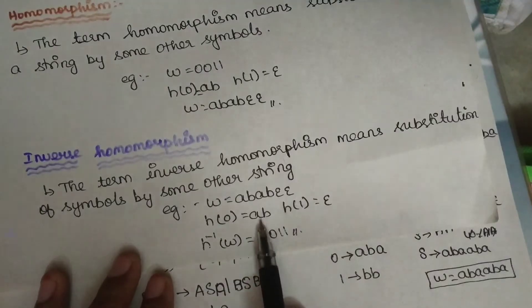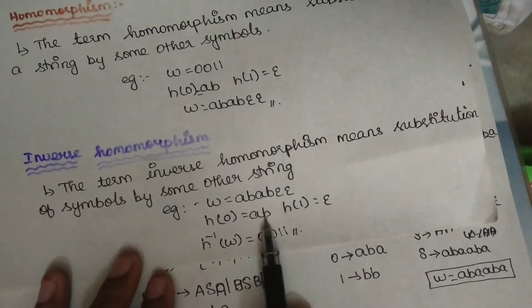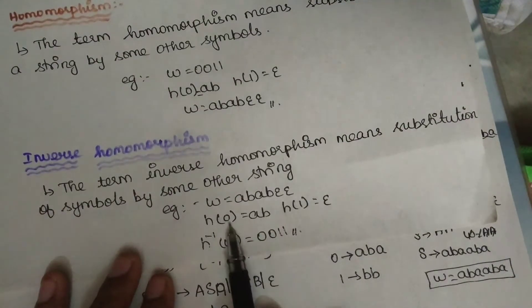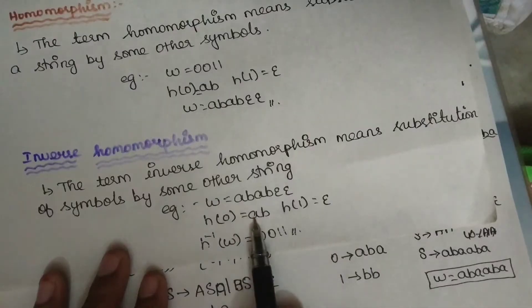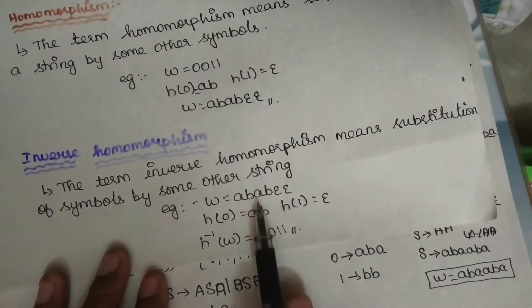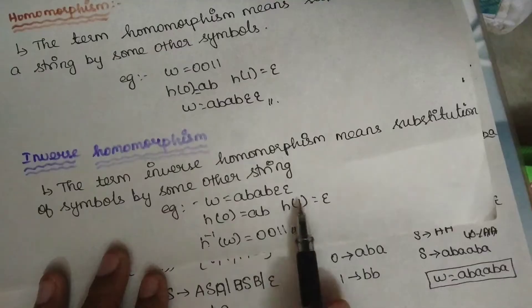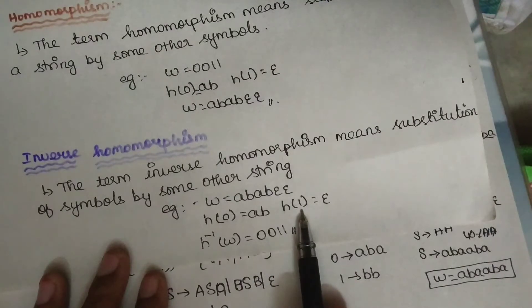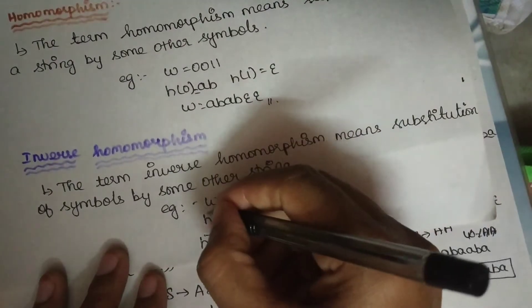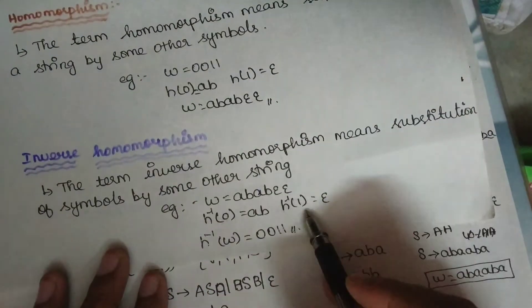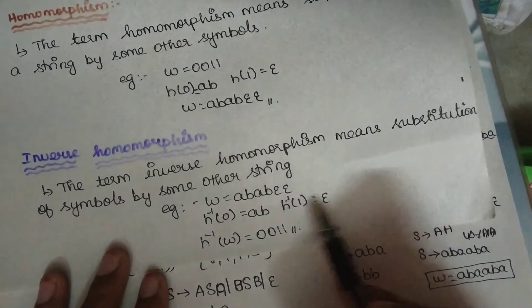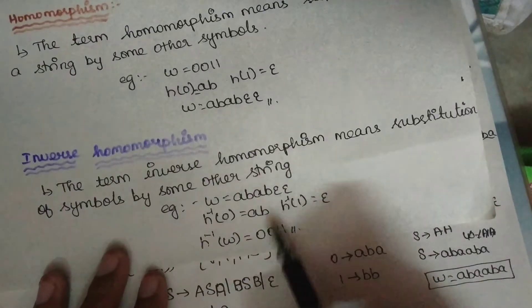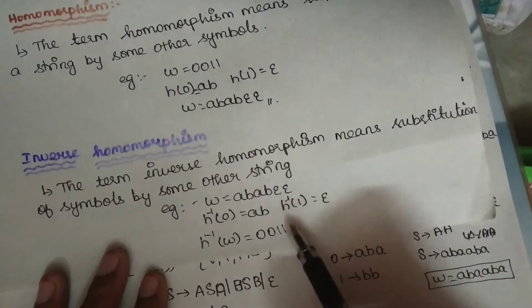Inverse homomorphism — this is not reverse. If there are strings, you can apply symbols. If AB maps to 0, and a null string can be substituted to 1, then 1 maps to 1. So inverse homomorphism works the same way — if null string, you can substitute it to 1. This is the same approach.